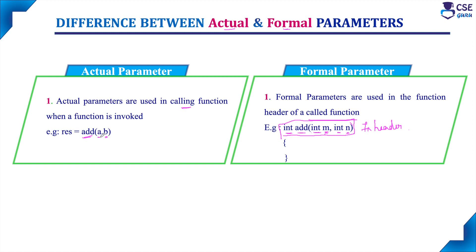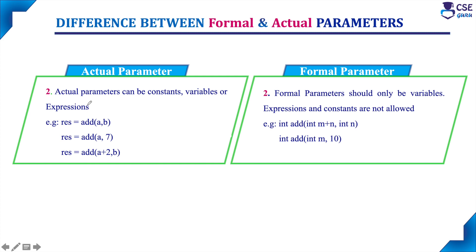If you have declared a and b as float data type in the main function and in the formal parameter you have declared int, then these parameters will not match and this will raise an error. So the number of parameters and the data type of each parameter should match between actual and formal parameters. Also, in the actual parameter, it is not necessary to mention the parameters along with their data type — this is the first difference.